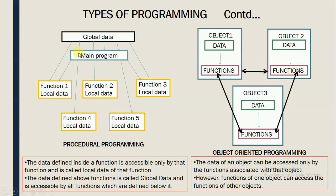Let us understand the pictorial view of these programming paradigms. Here, in procedural programming, you can see the main function is divided into subfunctions like function 1, function 2, function 3, function 4, and function 5. All these functions have data defined inside them and this data is accessible to these functions only — this is called the local data of these functions.